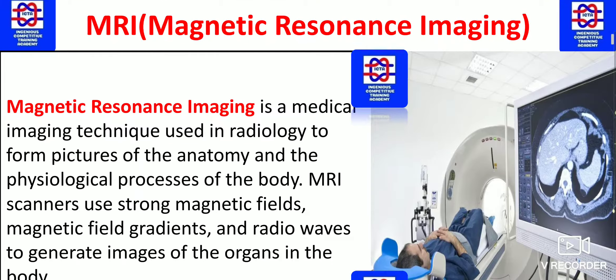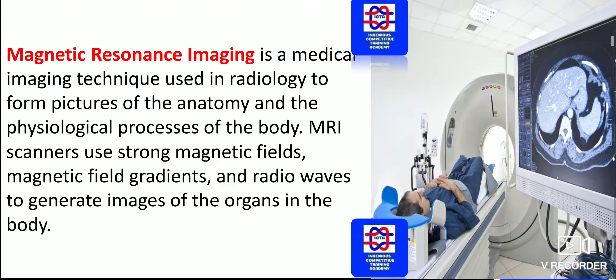Next we have MRI, that is magnetic resonance imaging. It is a medical imaging technique used in radiology to form pictures of the anatomy and the physiological processes of the body. MRI scanners use strong magnetic fields, magnetic field gradients, and radio waves to generate images of the organs in the body. You will be sent inside the MRI scan machine and scanned all over the body using these magnetic radiations.